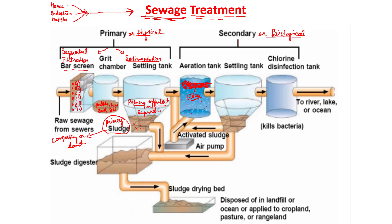These flocs, formed by the bacteria and fungal association, sediment in the settling tank. The water from the aeration tank is pumped into the settling tank, and these flocs settle to the bottom. This settled material is known as activated sludge, which contains a lot of aerobic microbes and fungi.